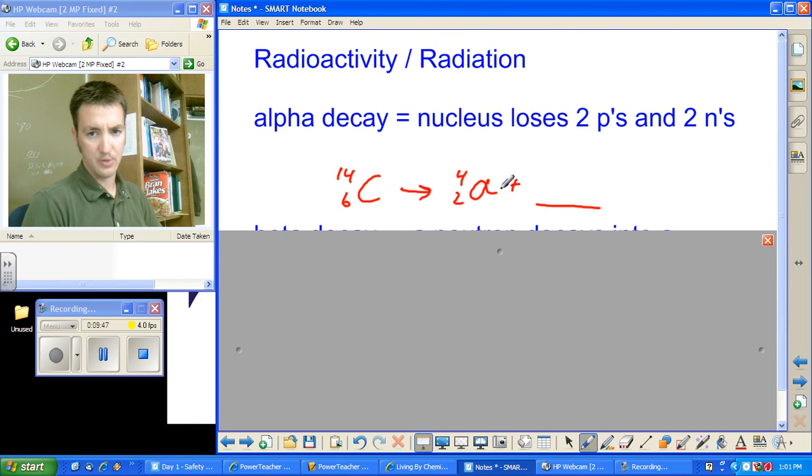So, the result of alpha decay is this side has to equal that. What plus two equals six? What plus four equals ten? Again, it was very tempting. A lot of you guys were going to put eight right here. Remember that's an equals. So, if carbon undergoes alpha decay, it turns into a smaller element of beryllium. So, if you look at the table, it would be a couple to the left.